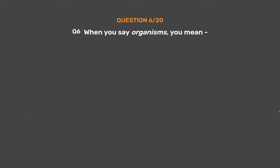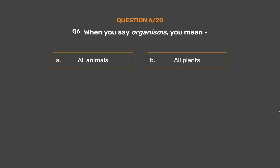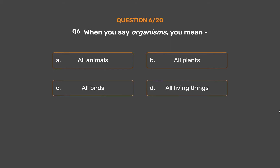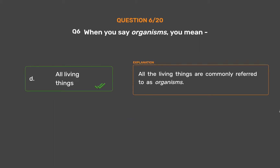Question 6. When you say organisms, you mean: Option A: All animals. Option B: All plants. Option C: All birds. Option D: All living things. The correct answer is Option D: all the living things are commonly referred to as organisms.